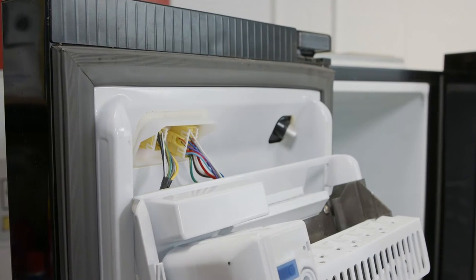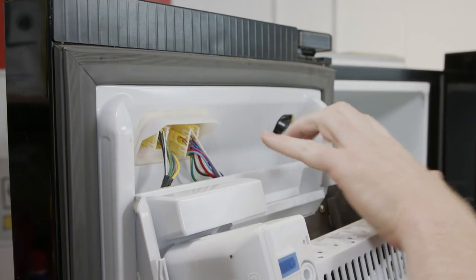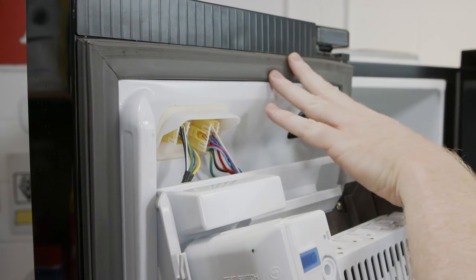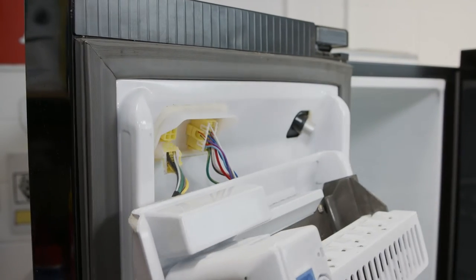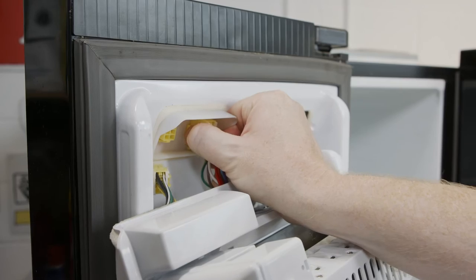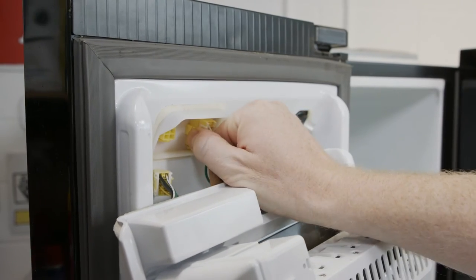Once the panel is released, you'll see there are two plugs holding the ice maker to the freezer door. Simply push in the clips to release the plugs and the ice maker itself.